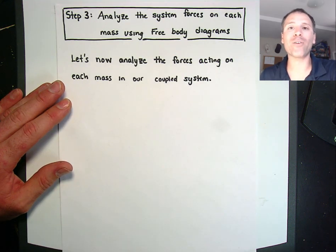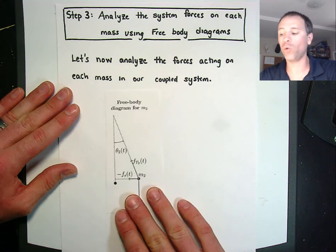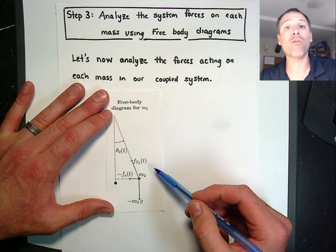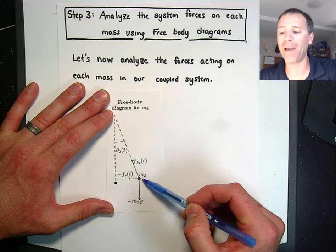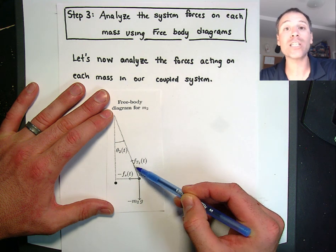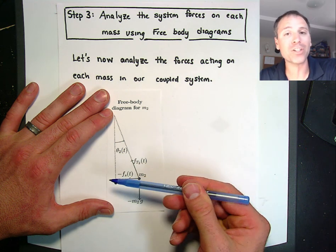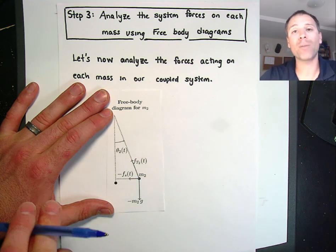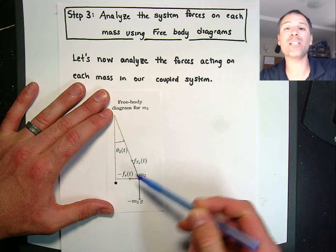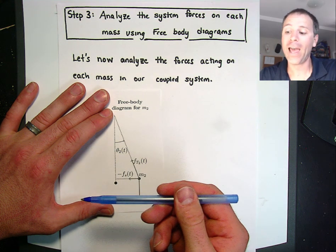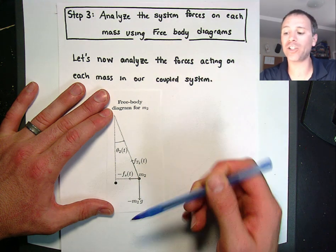Just as we looked at our free body diagram for mass 1, let's take a look at a free body diagram for mass 2. Formally, mass 2 has a tension force in the chord, it has the spring force pulling in the opposite direction — the spring force on mass 1 was pulling towards mass 2, but the spring force on mass 2 is pulling towards mass 1 — and then we have the force of gravity pulling downwards in the vertical direction.